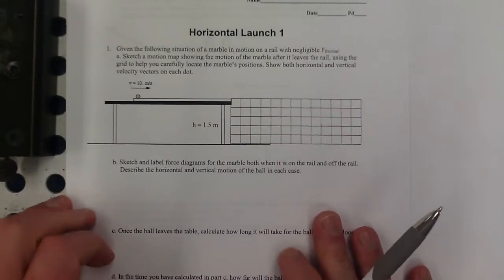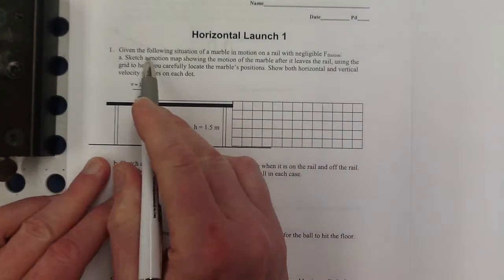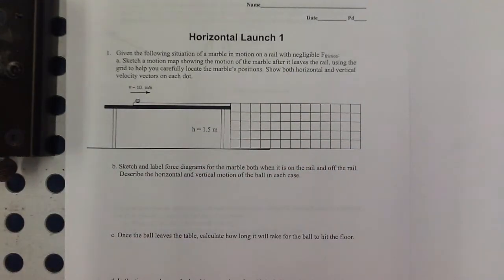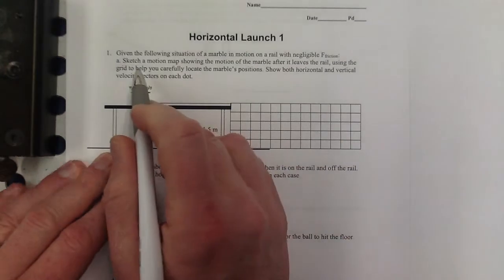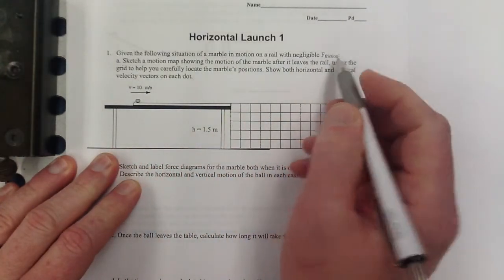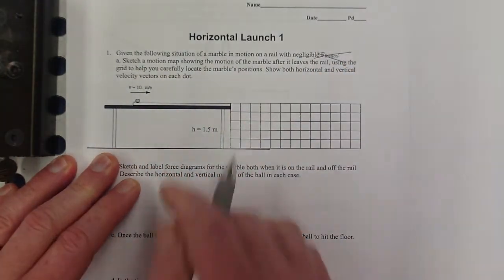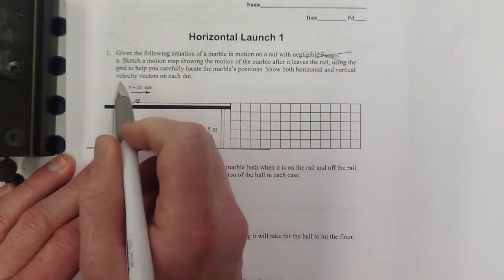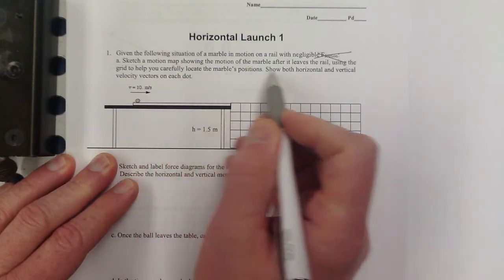Alright, horizontal launch number one. I've got a marble similar to the example that I did for you in the notes. No friction, so don't have to worry about that. Sketch a motion map showing the motion of the marble after it leaves the rail, using the grid to help you carefully locate the marble's positions.